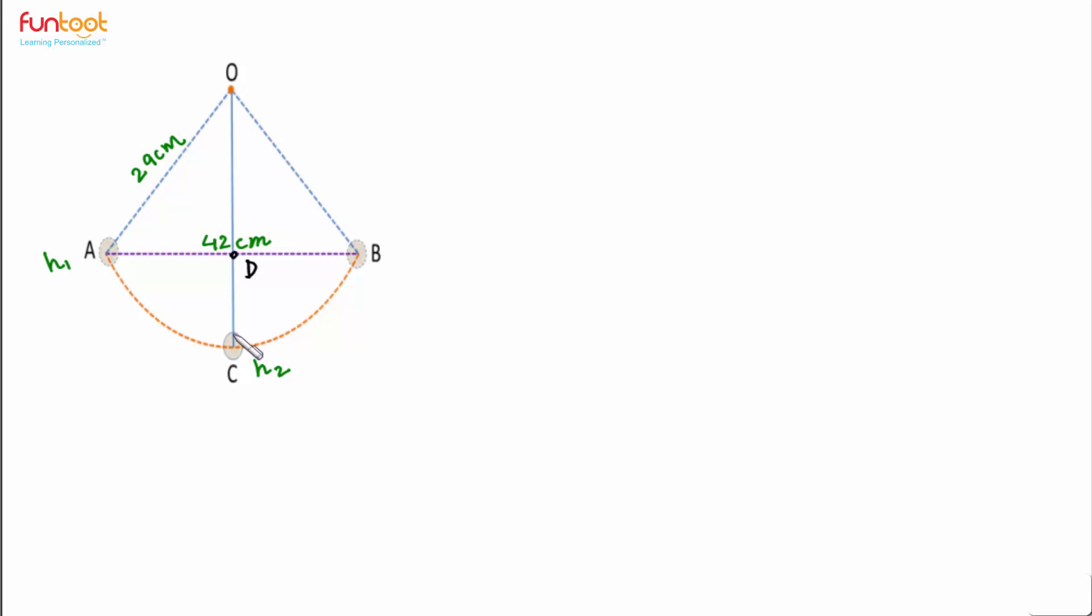Let's discuss the approach for finding CD. If we can find OD, and we know OC is the radius that is 29 centimeters, so from 29 centimeters if we subtract OD, we will get DC.